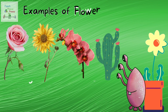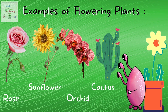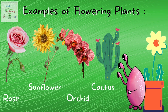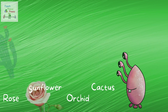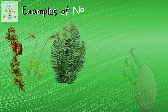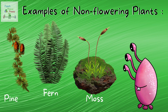Now let's look at some examples of flowering plants. Those would be rose, sunflower, orchid, and cactus. Now let's look at some examples of non-flowering plants. Those would be pine, fern, and moss.